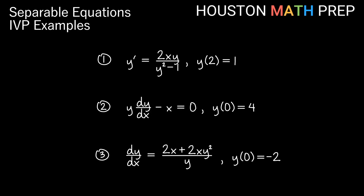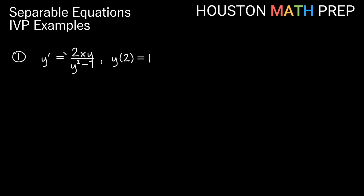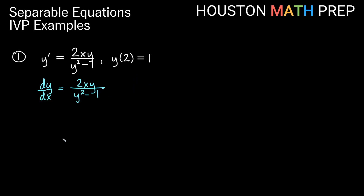Let's go ahead and move to our first example. We have y prime is equal to 2xy over y squared minus 1, and our condition is y of 2 equals 1. Remember when we have prime notation in separable equations, we generally want to write it in differential notation. I'm going to write my y prime as dy/dx, and we have 2xy over y squared minus 1, and we will worry about the condition after we get to our general solution.